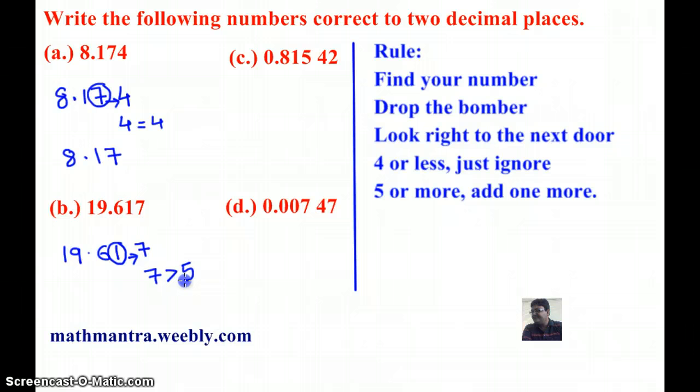And, if it's 5 or more, add one more to the circled number. So, I am going to add 1 to the number circled and my answer will be 19.62.